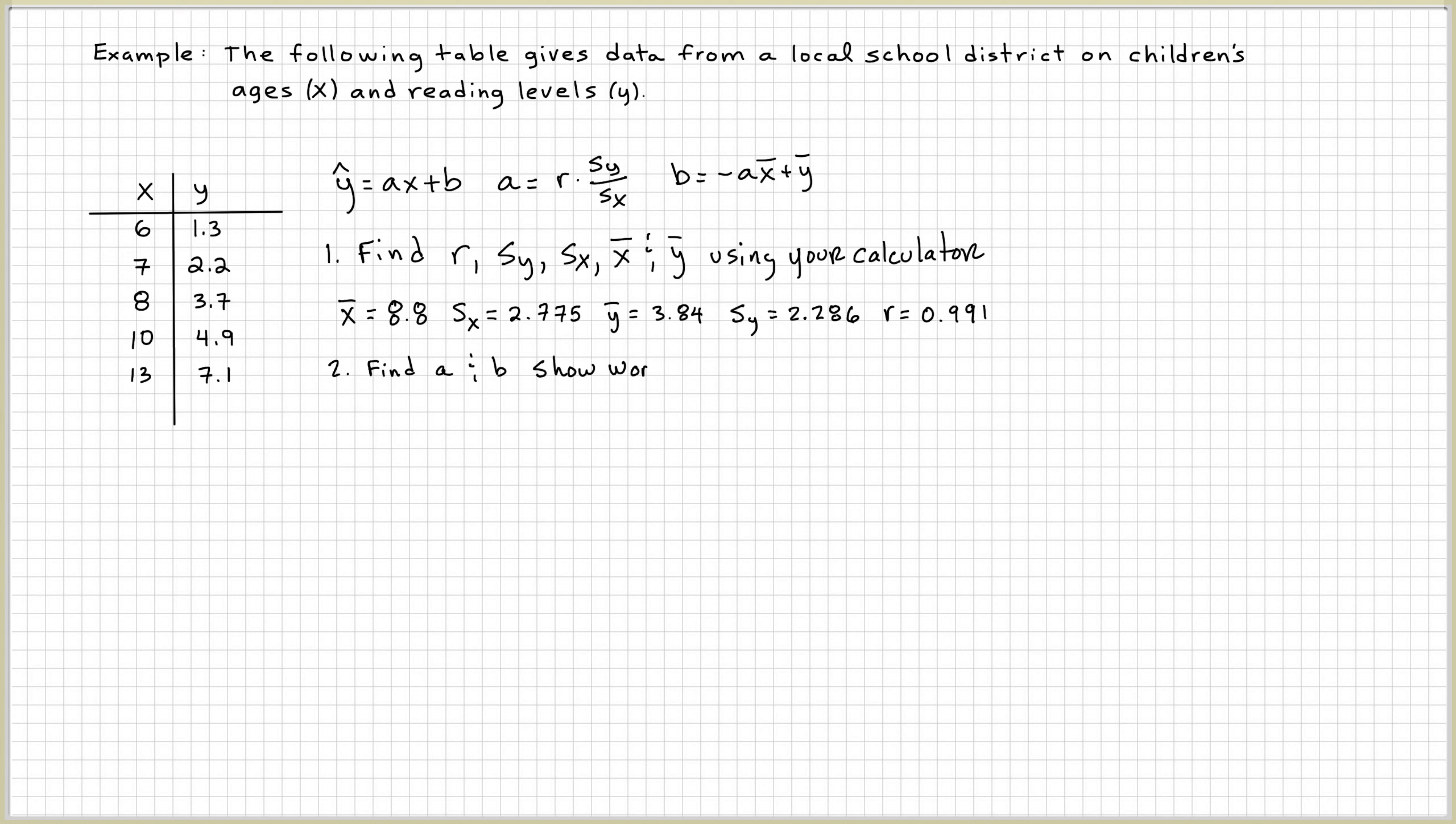The second thing is, let's find a and b. Let's show our work. So we take the formula for a, we plug in 0.991 for r, and then 2.286 divided by 2.775. You calculate that. That gives you 0.816.